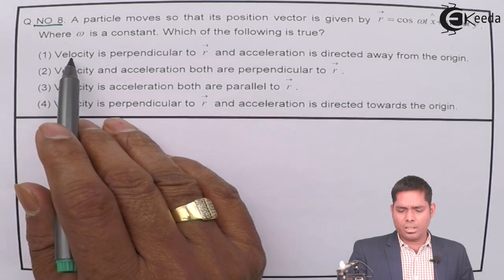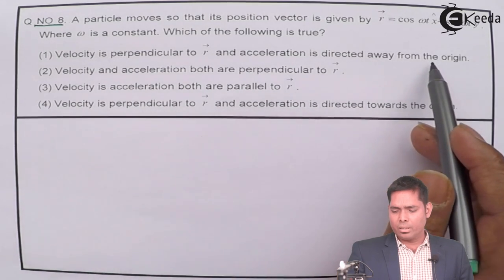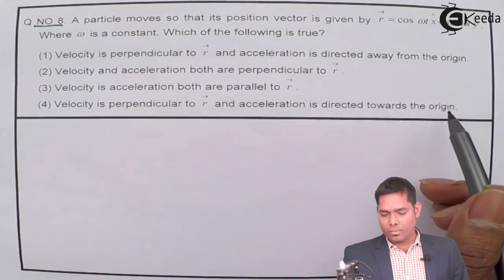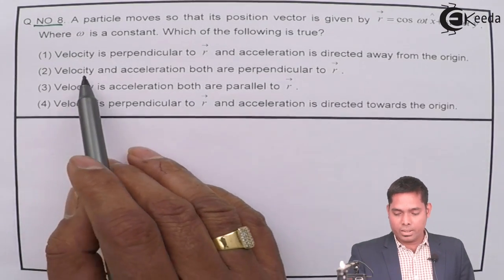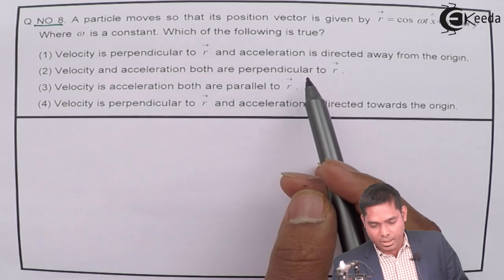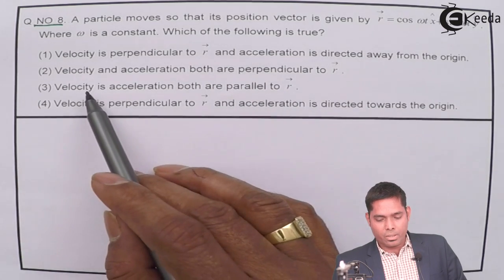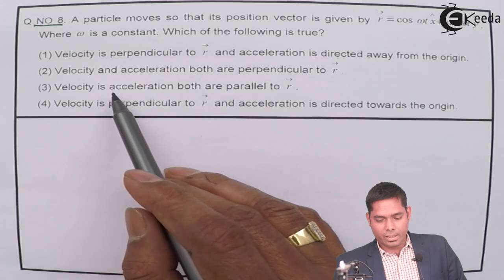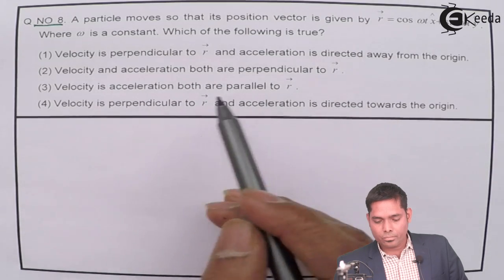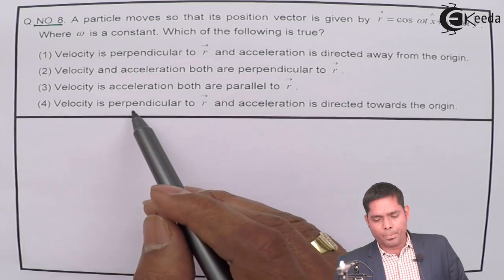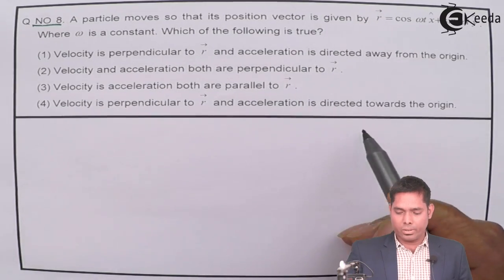Option A: velocity is perpendicular to r and acceleration is directed away from the origin. Option B: velocity and acceleration both are perpendicular to each other. Option C: velocity and acceleration both are parallel. Option D: velocity is perpendicular to r and acceleration is directed toward the origin.